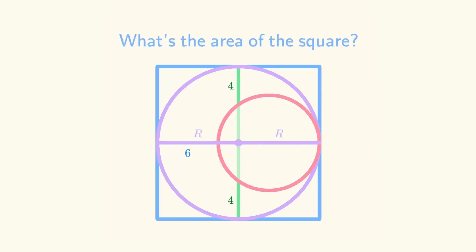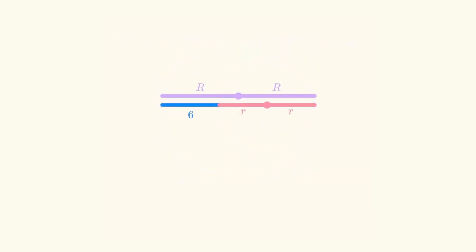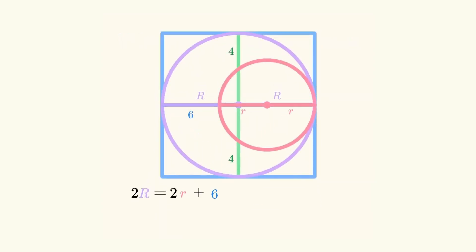Let's call the radius of the large circle uppercase R, and the radius of the small circle lowercase r. Now we can see that the diameter of the large circle equals the diameter of the smaller circle plus 6.